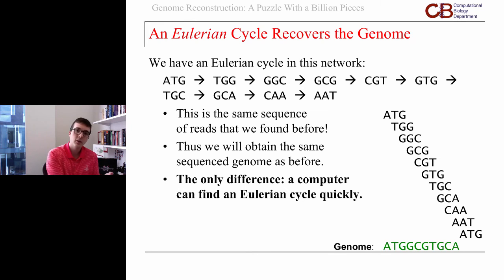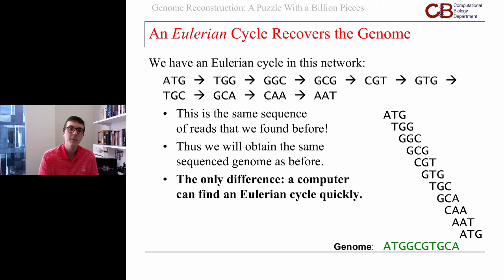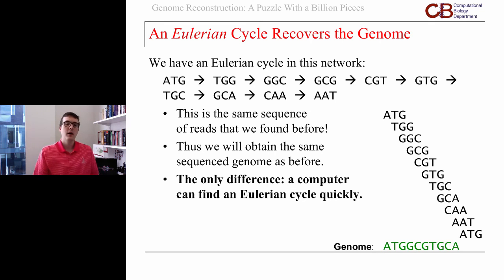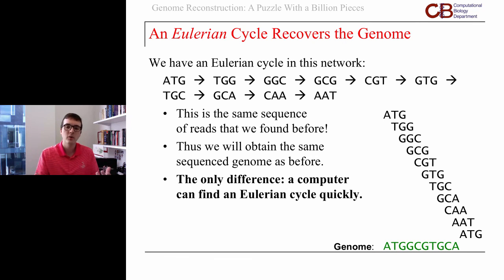Whereas before, modeling this as a Hamiltonian cycle problem ran into trouble because that's a difficult problem to solve on a big network, if we model this as an instance of the Eulerian cycle problem we get something that's a lot easier to solve, even for a very big network. Even for a data set close to a billion reads, a computer can find an Eulerian cycle and reconstruct a candidate genome in a reasonable amount of time. This method — taking the reads, converting them into a network with reads assigned to edges, and finding an Eulerian cycle or Eulerian path — serves as the foundation for sequencing algorithms running around the world, sequencing genomes from all different types of species as well as humans.